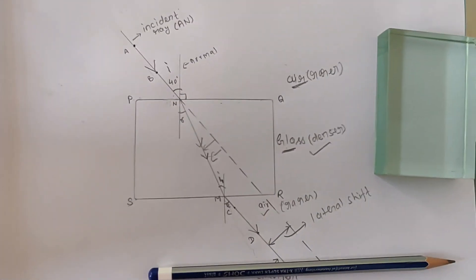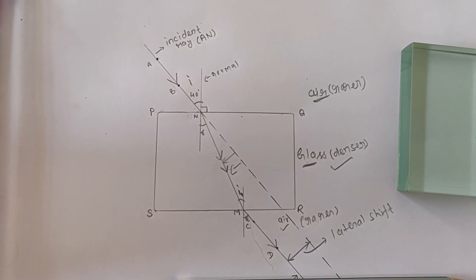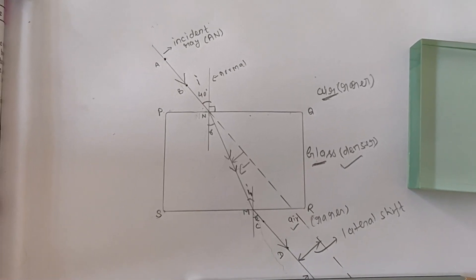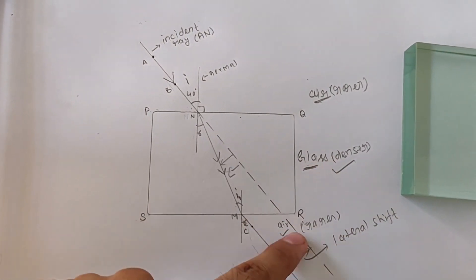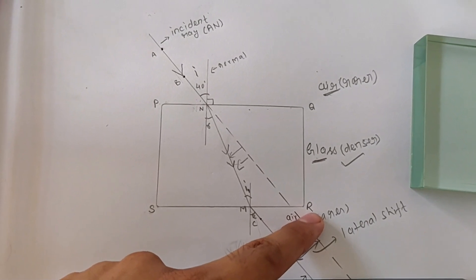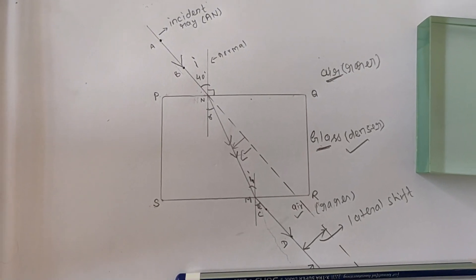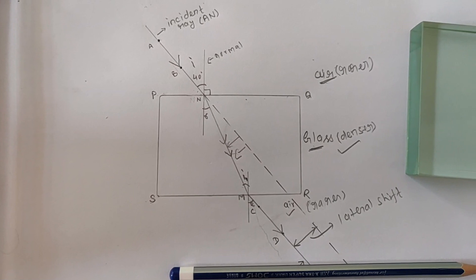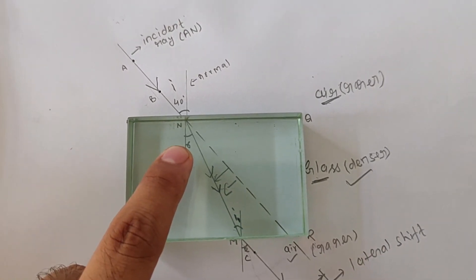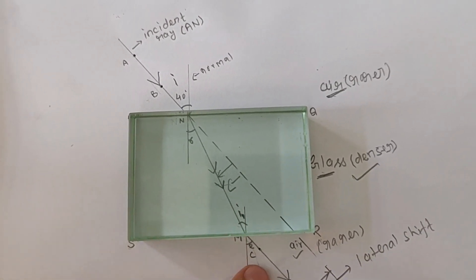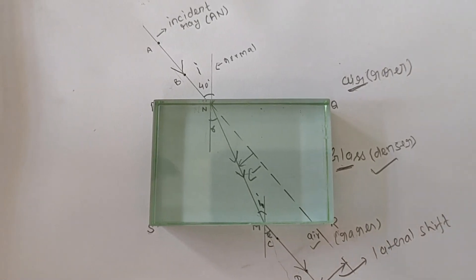So to summarize: when a ray of light passes from a rarer medium to a denser medium, it bends towards the normal; and when it passes from a denser medium to a rarer medium, it moves away from the normal. This is refraction of light. Finally, we can also calculate the angle of incidence i, angle of refraction r, and emergent angle e from this experiment.